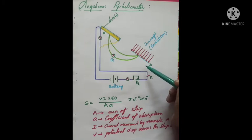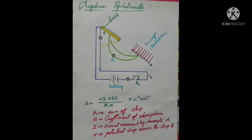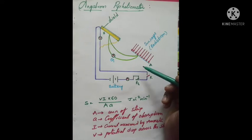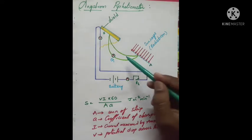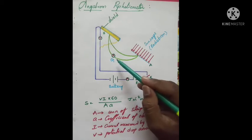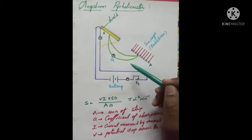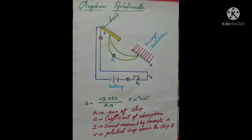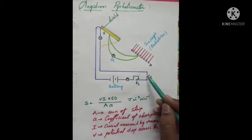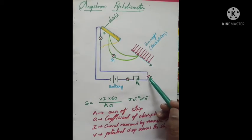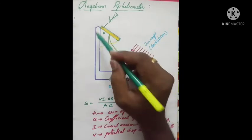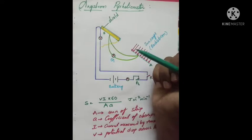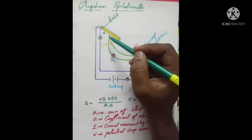When strip A gains solar energy and its temperature increases, a current is generated in the thermocouple circuit and a deflection occurs in the galvanometer. By switching on the electric current through the key, current flows through strip B, causing its temperature to also increase.